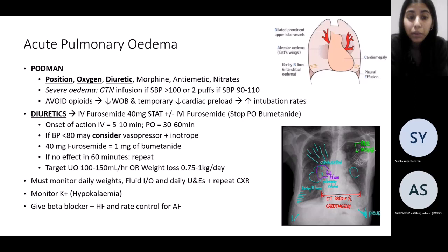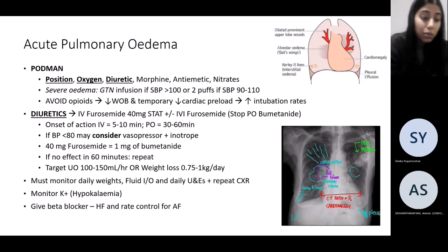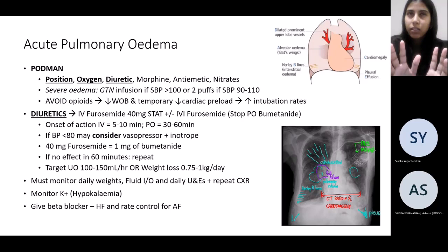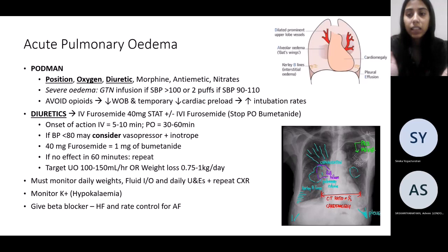A common clinical point: patients may have impaired renal function or their urea and creatinine suggest an AKI, but holding furosemide in acute pulmonary edema because you're worried about the AKI would be detrimental. The reason there may be an AKI is that the kidneys are hypoperfused because of the acute pulmonary edema. So you still need to give furosemide — it will improve perfusion to the kidneys and they will start to improve.